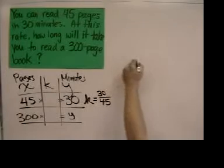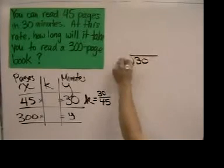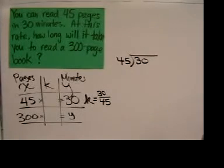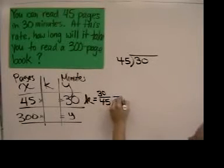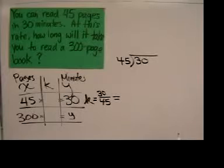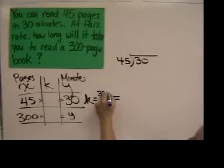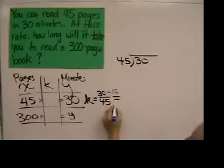And we can either do 30 divided by 45 or we can reduce it as a fraction. And I'd prefer to reduce this problem as a fraction instead of actually doing the division. So 30 and 45 are both divisible by 15.